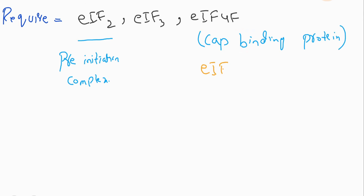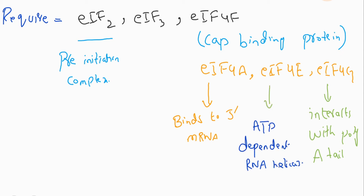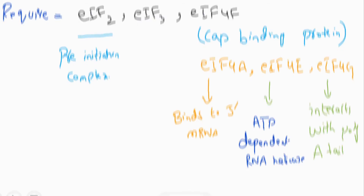Within the eIF4F complex: eIF4A binds to the 5 prime end of messenger RNA, eIF4G interacts with the poly-A tail, and eIF4E is an ATP-dependent RNA helicase. This ATP-dependent RNA helicase unwinds the secondary structure in the messenger RNA and prepares it for translation.